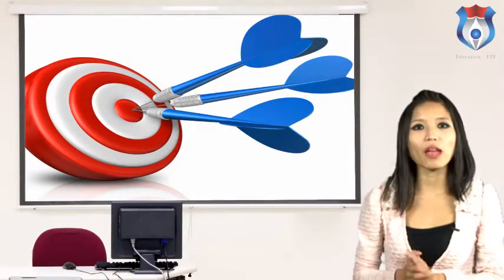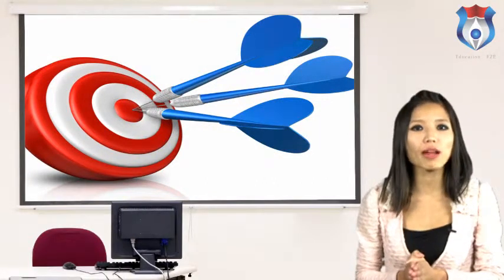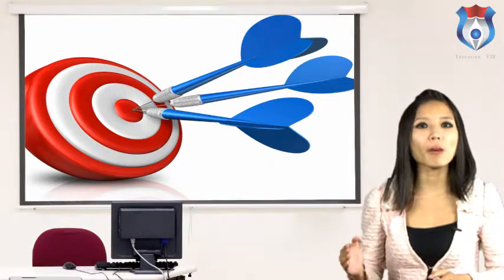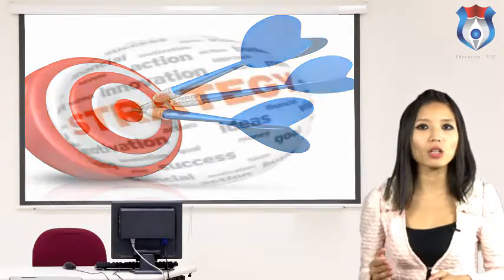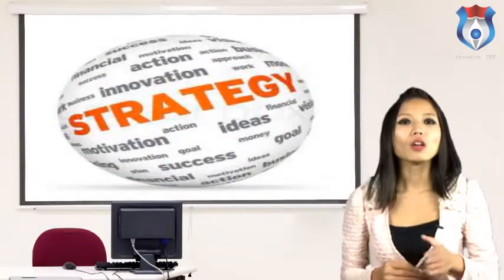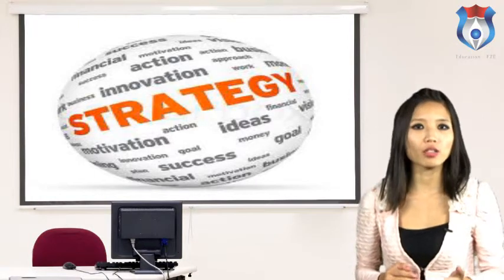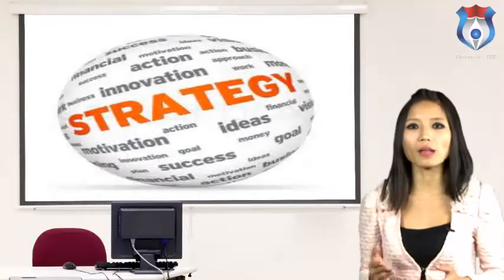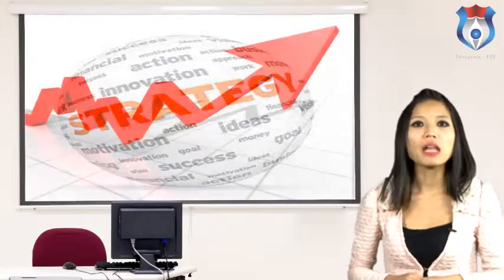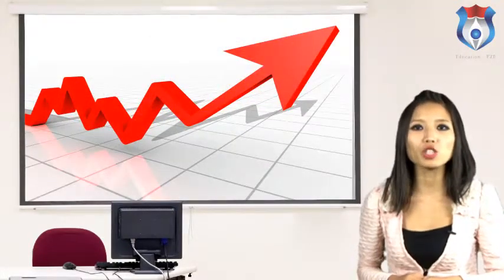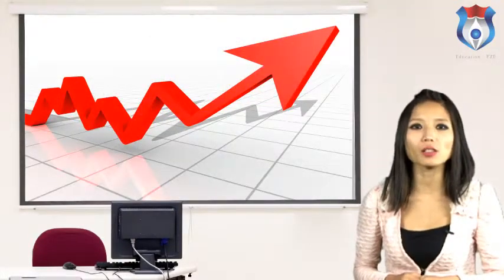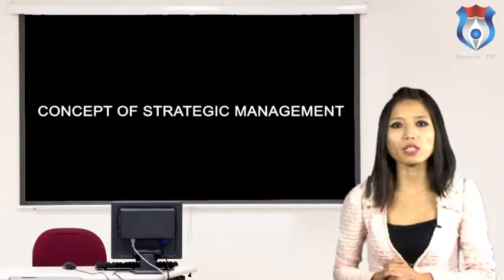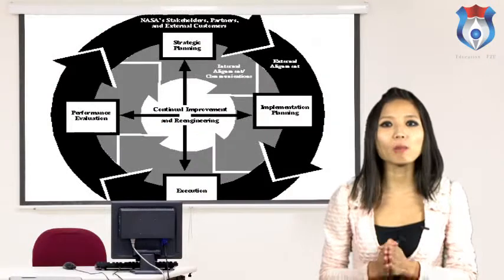Key aspects of strategy implementation include: developing an organization with the potential to carry out the strategy successfully; disbursement of abundant resources to strategy-essential activities; creating strategy-encouraging policies and employing the best programs for constant improvement; and linking the reward structure to the accomplishment of results, making use of strategic leadership.